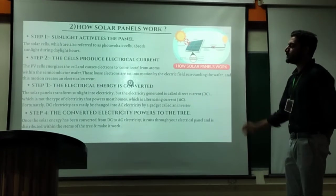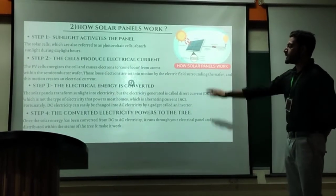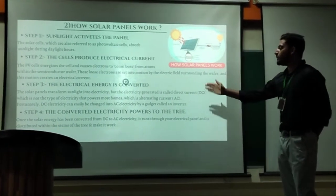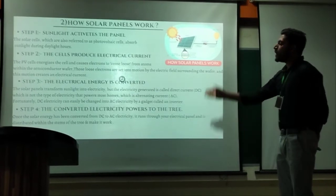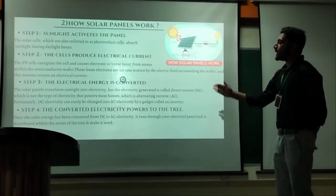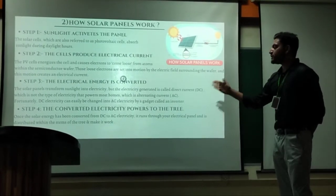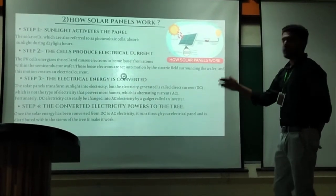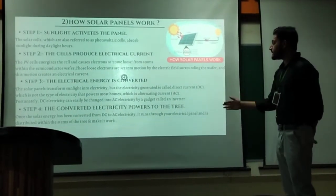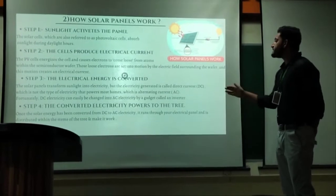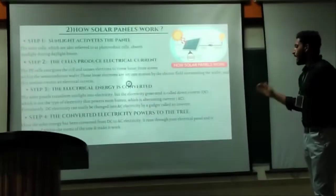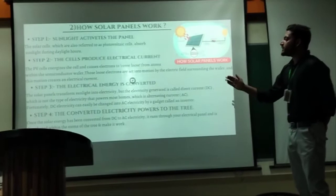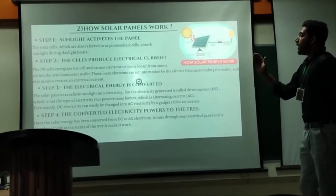Once the solar energy has been converted from DC to AC electricity, it goes through your electrical panel and is distributed within the home's circuits, making it usable for everyday appliances.